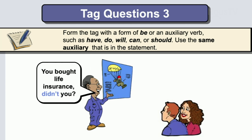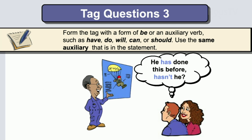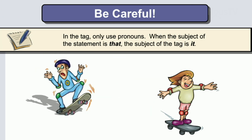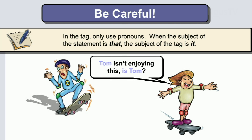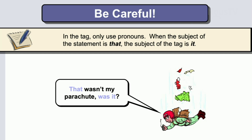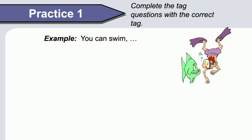Notice what we have here. You bought life insurance, didn't you? He has done this before, hasn't he? He's joking, isn't he? He isn't joking, is he? In the tag, use only pronouns. When the subject of the statement is a noun, the subject in the tag should be a pronoun. Tom isn't enjoying this, is he? — Tom should be changed to 'he'. That wasn't my parachute, was it? When the subject of the statement is 'that', change the subject in the tag to 'it'.